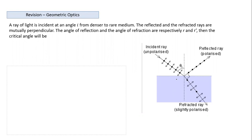The lecture then briefly introduces Brewster's law, which is part of the topic of polarization. Light consists of oscillating electric and magnetic fields that are mutually perpendicular, and polarization relates to the orientation of these field oscillations.